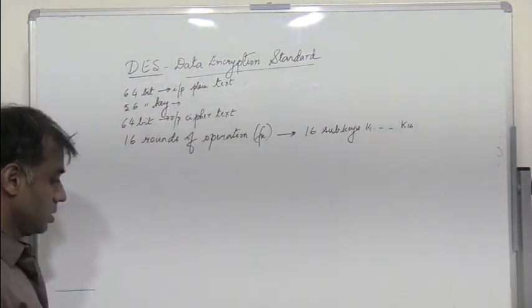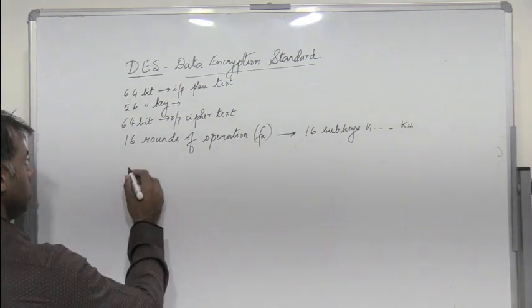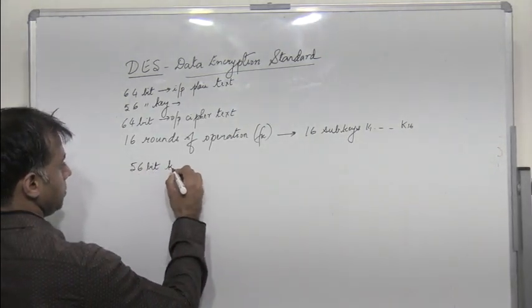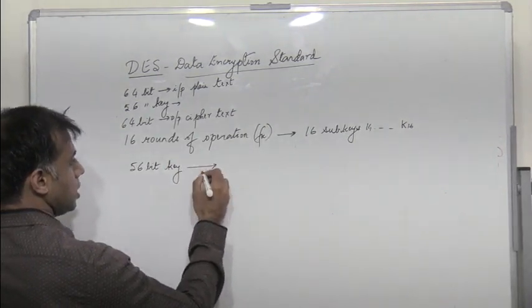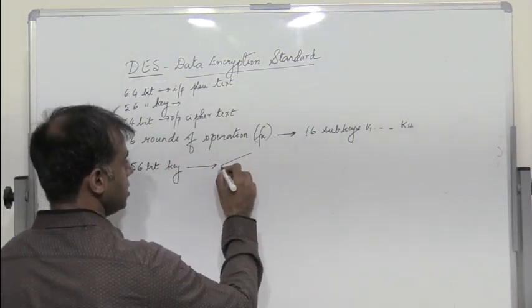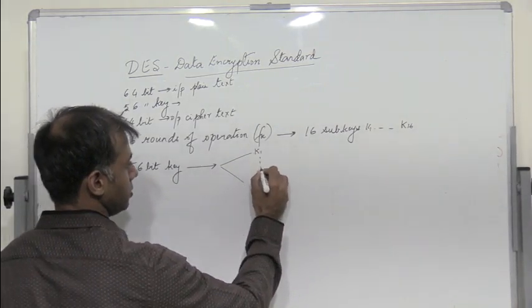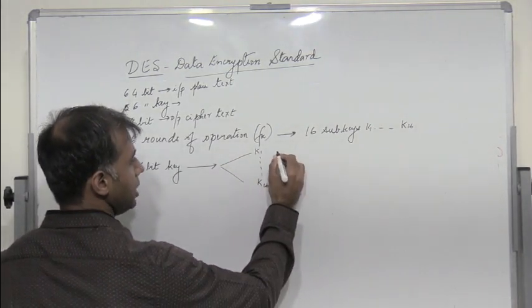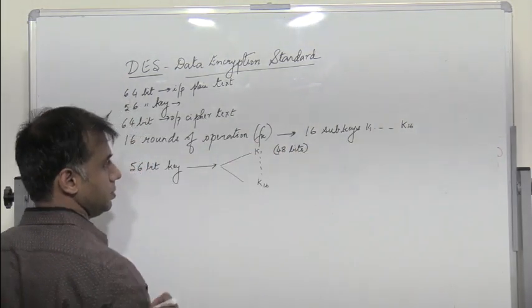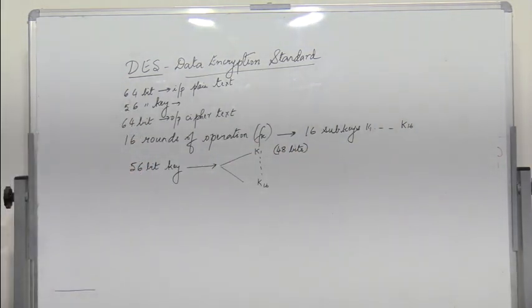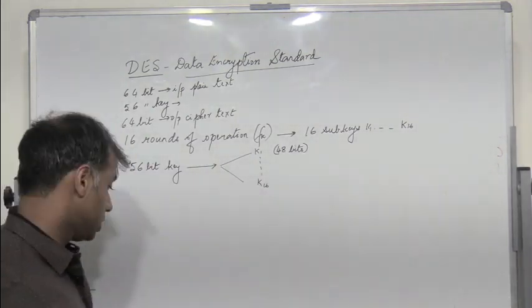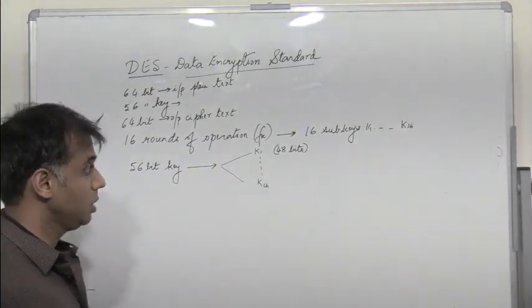Initially in the key generation unit, we have a 56-bit key. Internally, the algorithm generates 16 sub-keys, each of length 48 bits. All these keys, each of them are of length 48 bits. So that's very important.